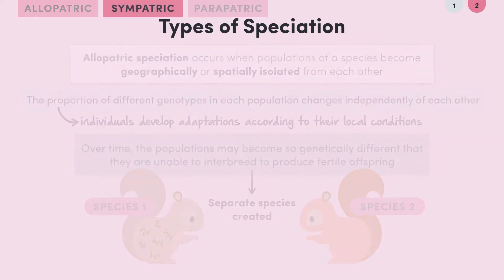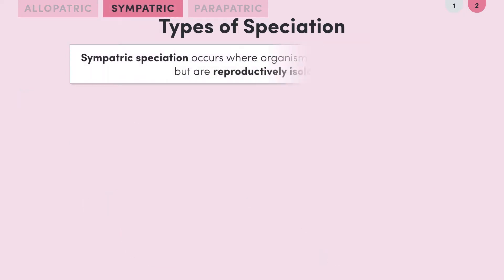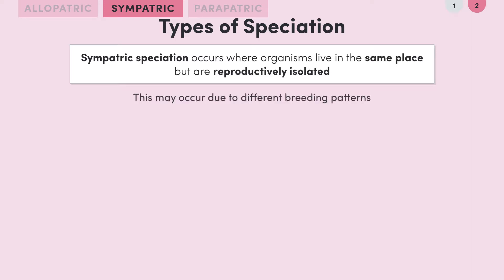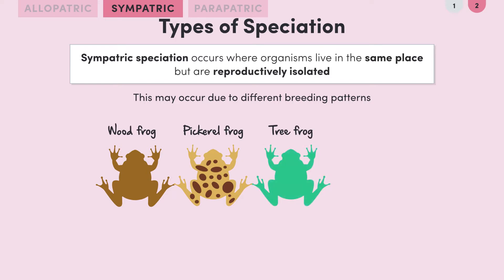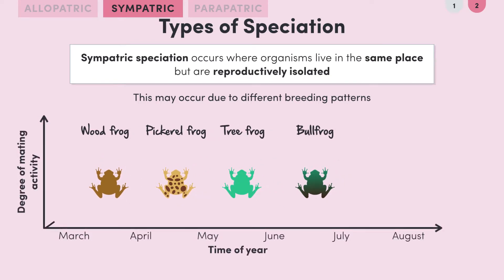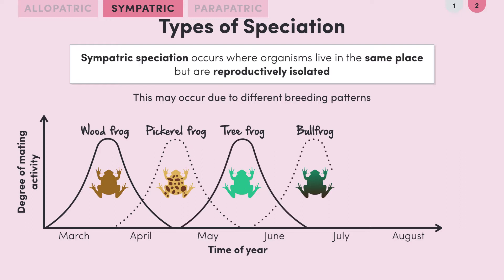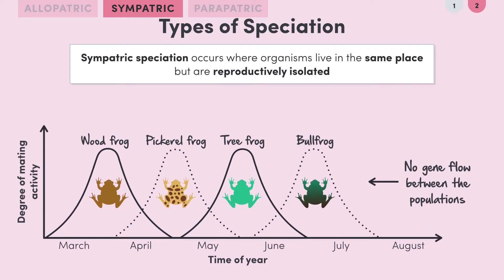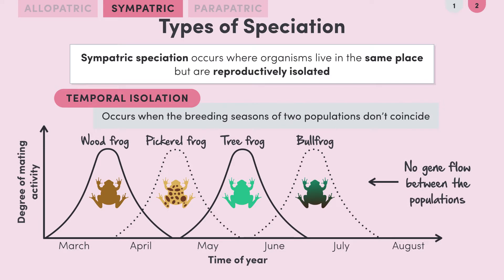Now let's take a look at sympatric speciation. This occurs when organisms live in the same place but are still reproductively isolated. There could be several reasons why individuals don't breed with each other. One example is that they might have different breeding patterns. In fact, there are four different types of frog — the wood frog, the pickerel frog, the tree frog and the bull frog — that live in the same forest but have different seasons of mating activity. The wood frog is active around March and April, but by May and June when the tree frog is active, there is no gene flow between the populations.